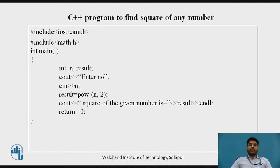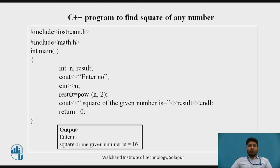Cout displays 'square of the given number is equal to' followed by result. Whatever is calculated using POW(N, 2) is stored in result and displayed. The output will be: 'enter a number' — if the user enters 4, the square of the given number is 16. So the key logic in this program is the POW function with N comma 2.